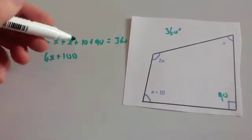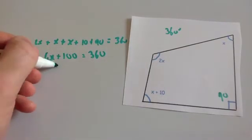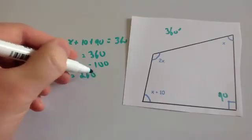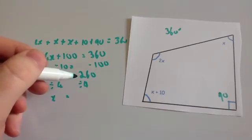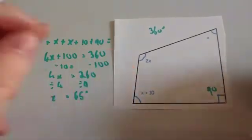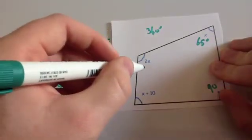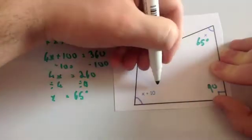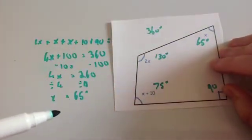So 4x plus 100 equals 360. Take away 100 from both sides to get 4x equals 260. Divide both sides by 4: half of 260 is 130, half again is 65. So x equals 65 degrees. Looking at the diagram: this angle is 65°, the 2x angle is 130°, the x plus 10 angle is 75°, and the right angle is 90°. Adding them all gives 360 degrees.